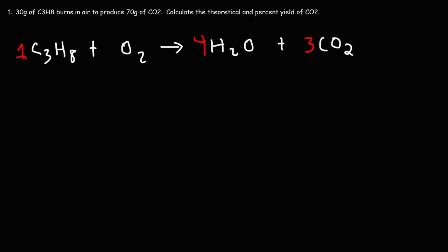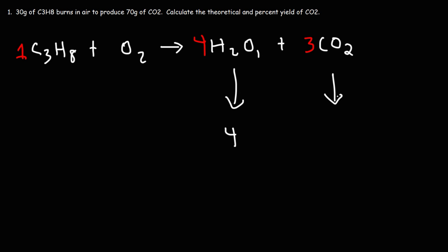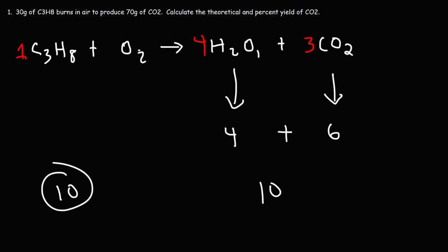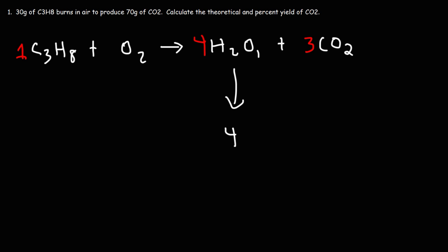Now we balance the oxygen atoms. In the four water molecules we have four oxygen atoms, and in the three CO2 molecules we have six oxygen atoms (3 × 2 = 6), for a total of ten oxygen atoms on the right side. We need ten on the left, and ten divided by two is five, so we put a 5 in front of O2. This gives us ten oxygen atoms on both sides, completing the balanced combustion reaction.